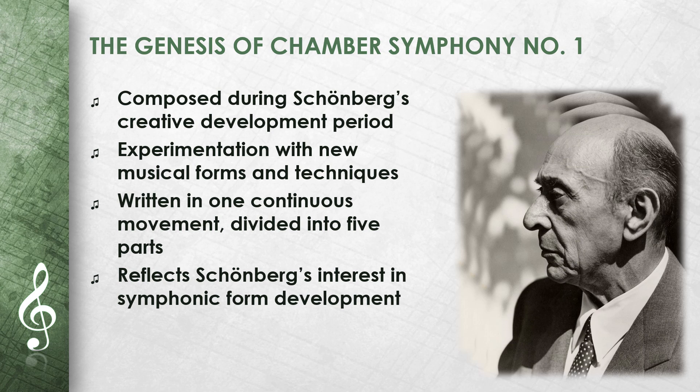The Chamber Symphony No. 1 was composed at a time of great creative development for Schoenberg. He was experimenting with new musical forms and techniques, which is evident in this work. The Chamber Symphony is written in one continuous movement, which is, however, divided into five connected parts. This structure allows for a continuous development of musical ideas and reflects Schoenberg's interest in the further development of the symphonic form.